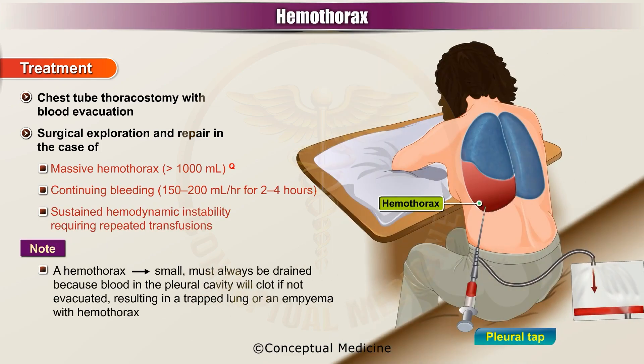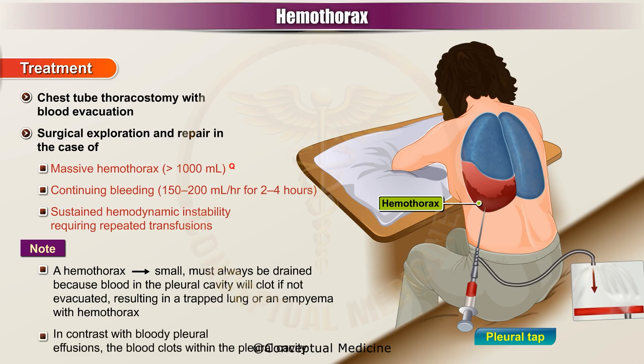A hemothorax, however small, must always be drained because blood in the pleural cavity will clot if not evacuated, resulting in a trapped lung or an empyema. With hemothorax, in contrast with bloody pleural effusions, the blood clots within the pleural cavity.